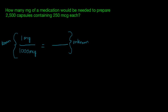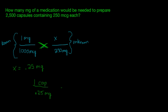We want to know how many milligrams it takes to get 250 micrograms. If we set it up like this, we cross multiply: 1 times 250, divide it by 1,000, and that gives us x equals 0.25 milligrams. We need to know how many milligrams we need to fill 2,500 capsules. One capsule equals 0.25 milligrams, and we want to know how many milligrams do 2,500 capsules hold.